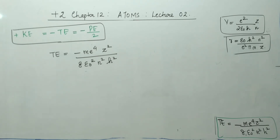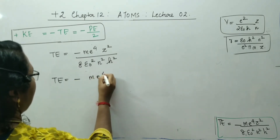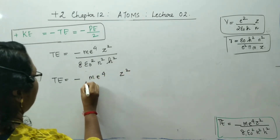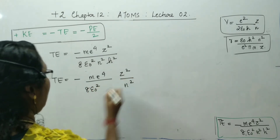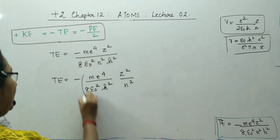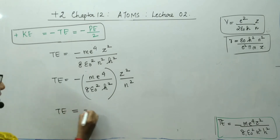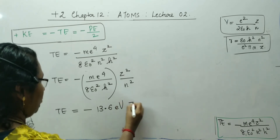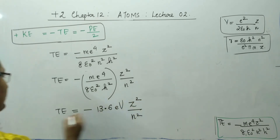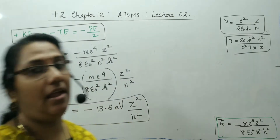This is the equation for total energy. Taking the constants together and expressing the value in electron volts, we get the total energy as -13.6 eV × z²/n². Important: the total energy may be taken as -13.6 eV × z²/n².